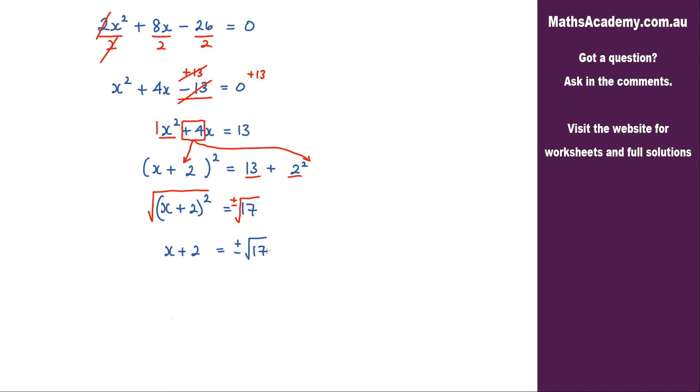And the last step is to eliminate the plus 2 here from the left. To do that we subtract 2. I need to do that to the right as well, subtract 2. I'm left with x = -2 ± √17.